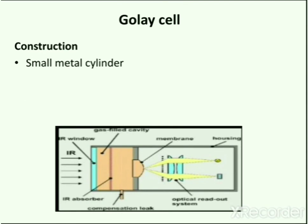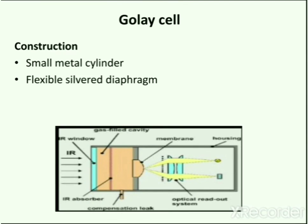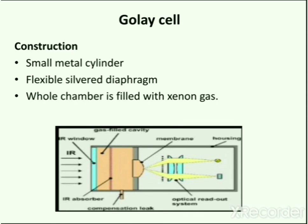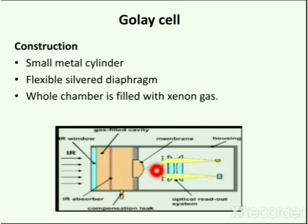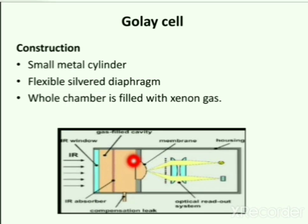The Golay cell is mainly used for infrared spectroscopy. It consists of a xenon-filled enclosure with an infrared-absorbing material and a flexible diaphragm or membrane. When infrared radiation is absorbed, it heats the xenon causing it to expand, and the resulting increase in pressure deforms the membrane. A light continuously reflecting off the membrane is detected by a photodiode, and motion of the membrane produces a change in signal on the photodiode. The detector detects the signal and a spectrum is produced by the recorder.